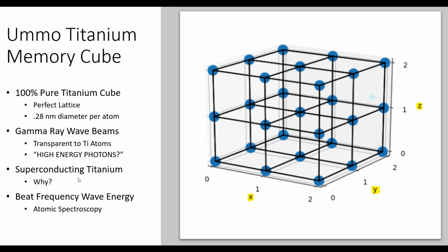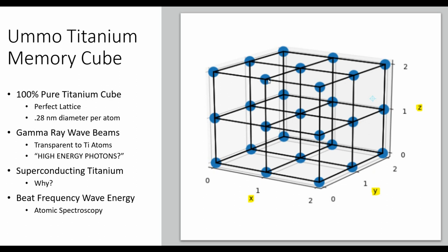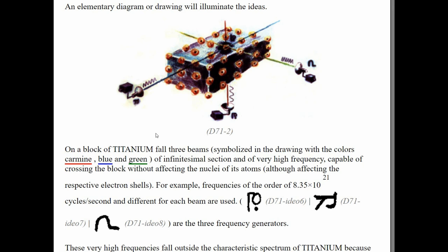Since it's in a superconducting environment, these vibrational patterns will continue on until they are interrupted in some way. This could be why you would want a superconducting environment for your memory storage. If you imagine each titanium atom enclosed in its own magnetic field, then any particular vibration can represent information. We now have our mechanism for storing data inside a titanium atom as a perpetual vibration of the electron medium. This is where the low-energy gamma ray lasers or wave beams come into play, along with atomic spectroscopy and a special form of wave interference: beat frequency.